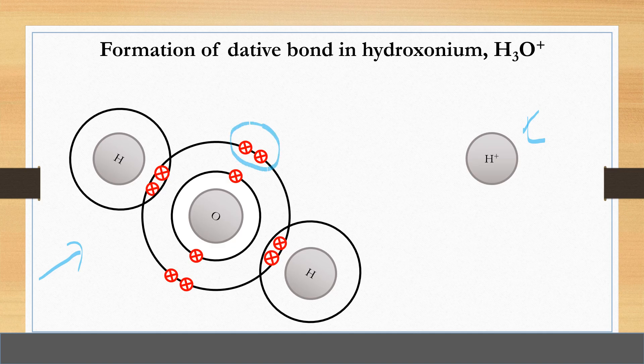The lone pair of electrons that are not involved in covalent bond in water molecule will be shared with hydrogen ion through the formation of dative bond.